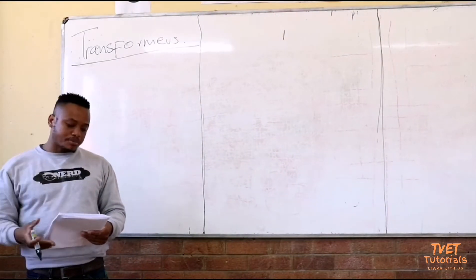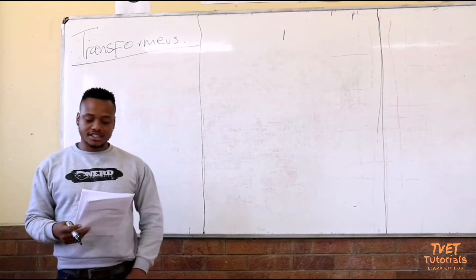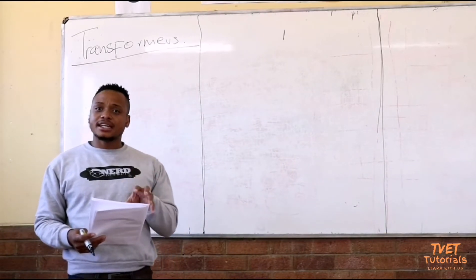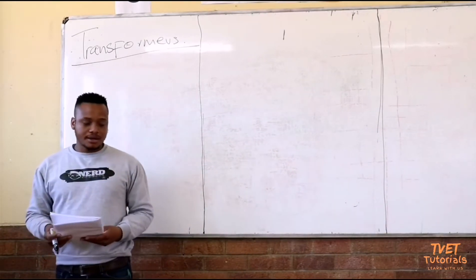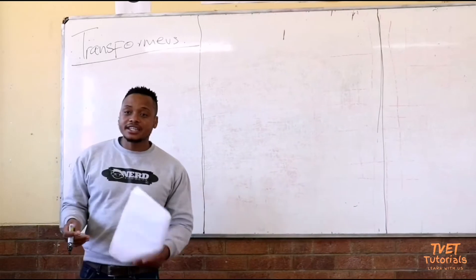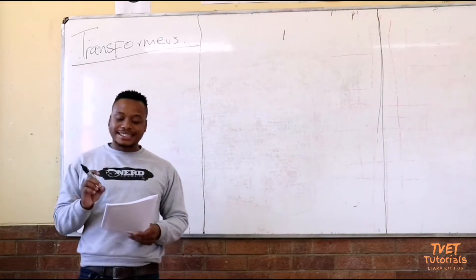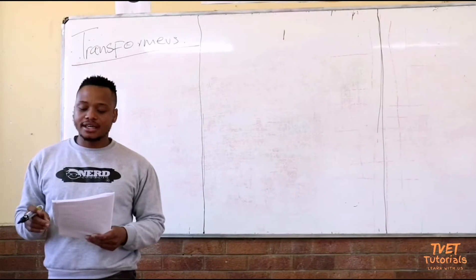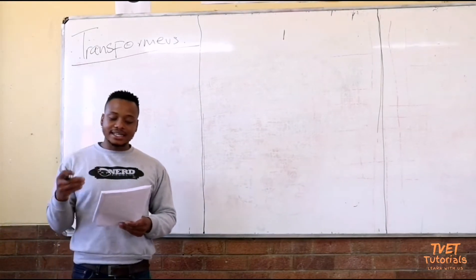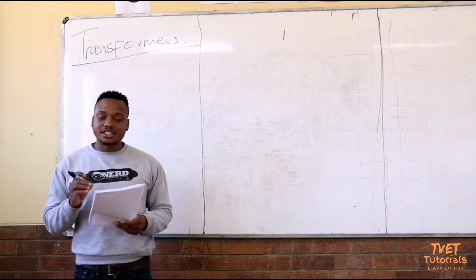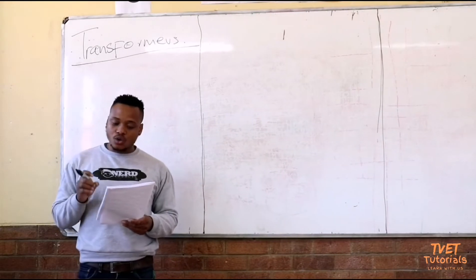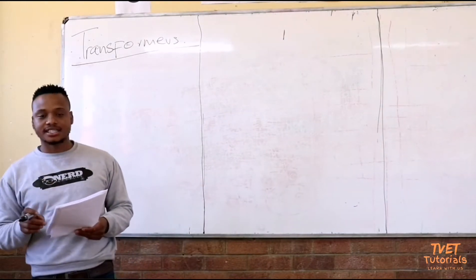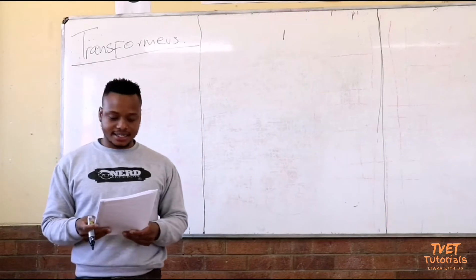We will start with the principle of operation of the transformer. Basically, what is an electrical transformer? By definition, an electrical transformer is a device that is used for either lowering or raising voltage in alternating current circuits, with a corresponding increase or decrease in the current.